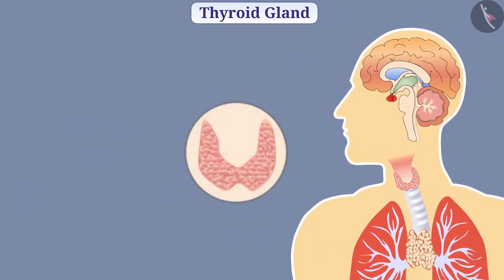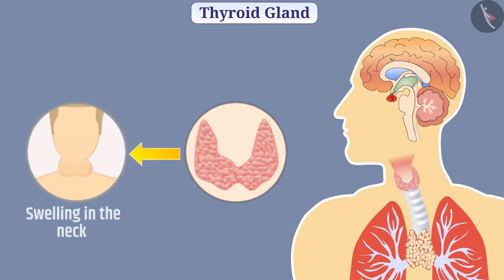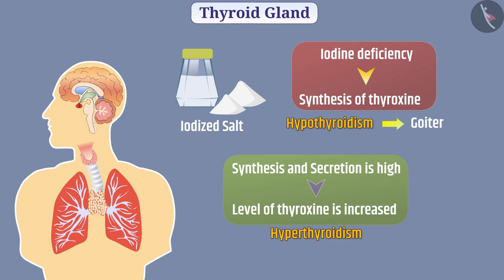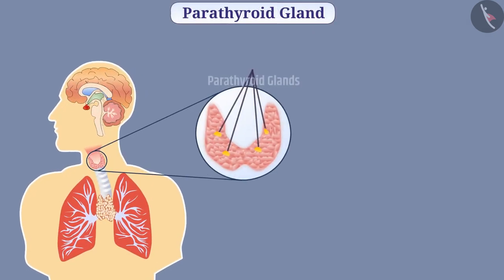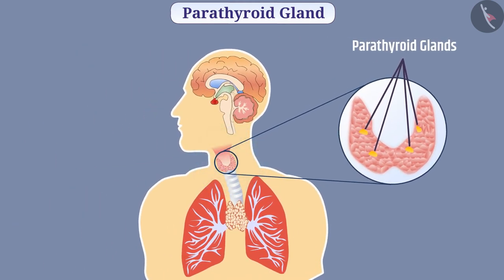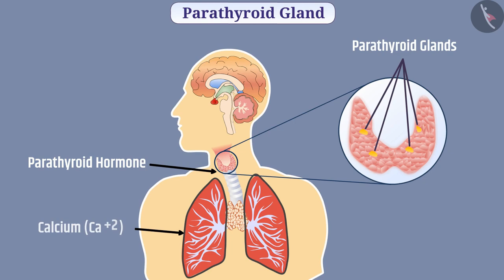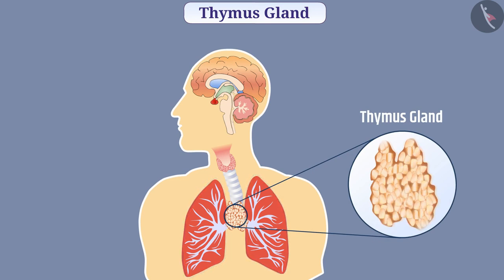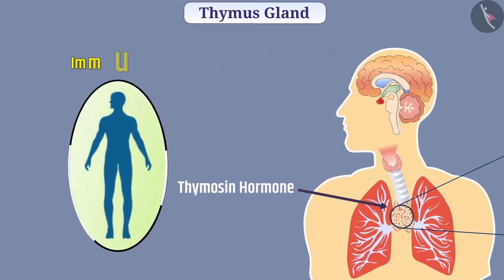In goiter, there is a growth of the thyroid gland and swelling in the neck. If the synthesis and secretion of thyroxine is high in the body, the level of thyroxine increases, which is called hyperthyroidism. There are four parathyroid glands present on the posterior surface of the thyroid gland, which secrete parathyroid hormone. Parathyroid hormone increases calcium levels in the blood. The thymus gland is present between the two lungs and secretes thymosin hormone, which assists in the development of the immune system.